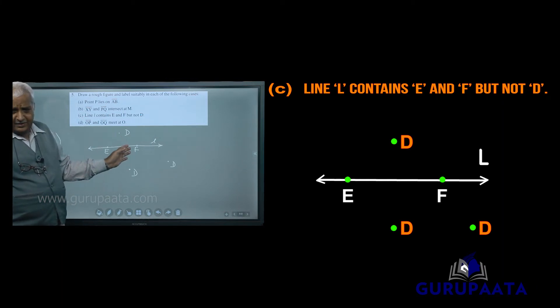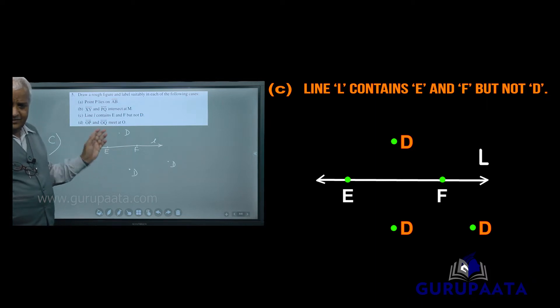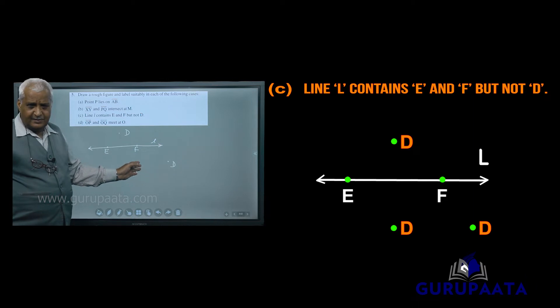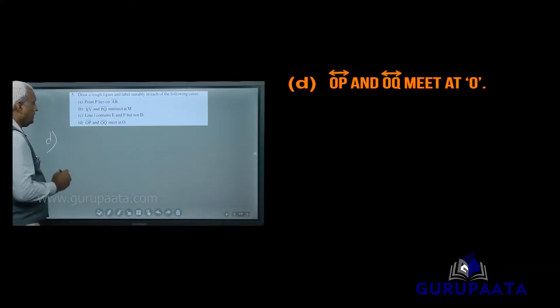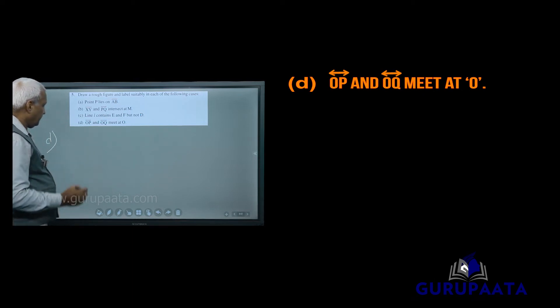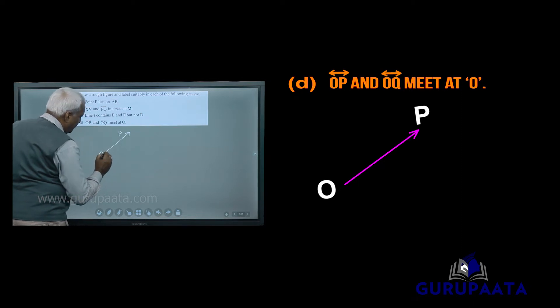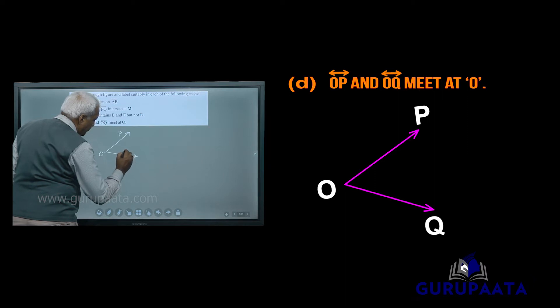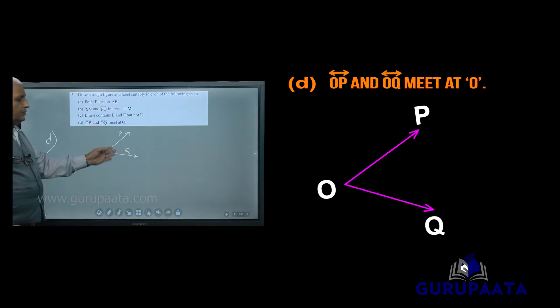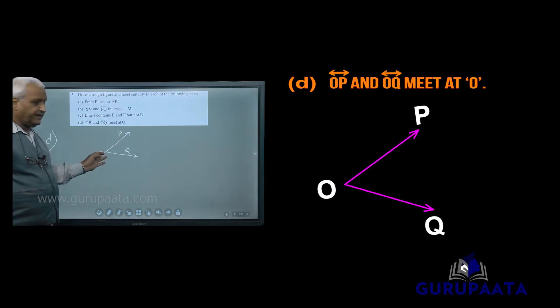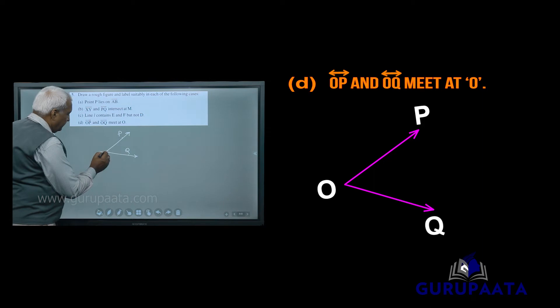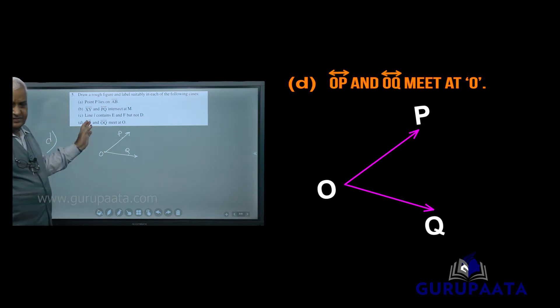Don't draw all three points on the line because D is the only one not on it. For explanation purposes I have shown it like this. Now for question D: OP and OQ meet at O. OQ and OP meet at O — this is the O point. So this is your drawing, and by this we have finished question number 5.